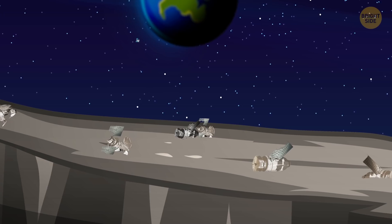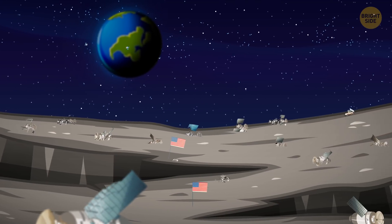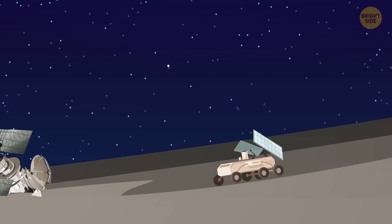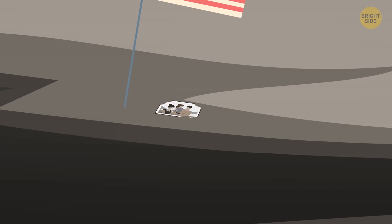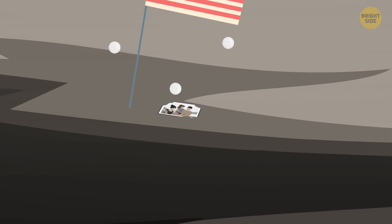Besides a couple dozen satellites and spacecraft that fell or landed softly on the Moon, there's a lunar rover, some United States flags, a family photo of one of the astronauts, and even three golf balls.